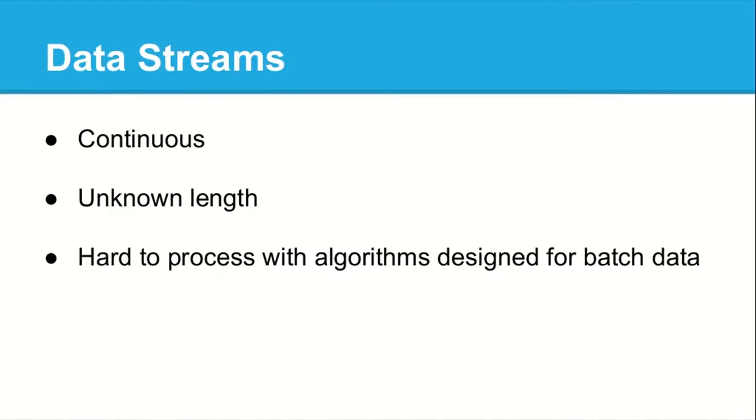A stream of data basically means the data is continuous, it's of unknown length — that's important — and most importantly it means you can't just use the normal approaches you'd use with batch data. If all your data was on your hard drive or memory, you could do something as simple as shuffling the data and if you want a sample of a thousand, just take the first thousand events from that shuffled data.